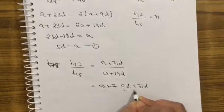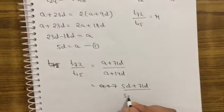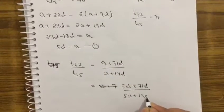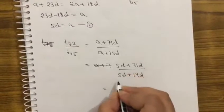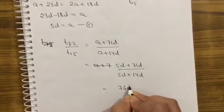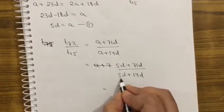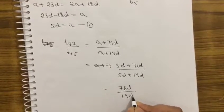That means a, a plus 71d. A is how much? 5d. And a plus 14d, a plus a. How much is it? 19d.